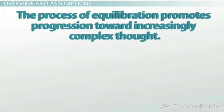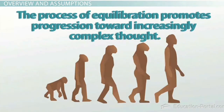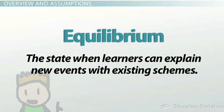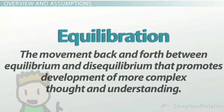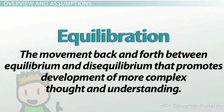Our fifth assumption deals with equilibrium. The process of equilibration promotes progression towards increasingly complex thought. Equilibrium is the state when learners can explain new events with existing schemes. Disequilibrium refers to the discomfort or cognitive conflict experienced when a child realizes that two views they hold can't possibly both be true. This recognition of contradiction promotes discomfort, which sets the stage for the reorganization of thinking on a higher level. Equilibration is the movement back and forth between equilibrium and disequilibrium that promotes more complex thought.